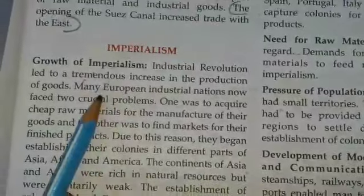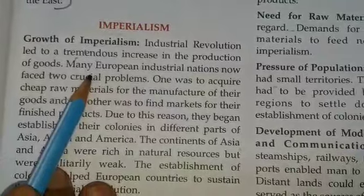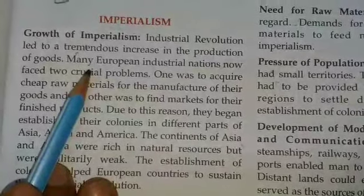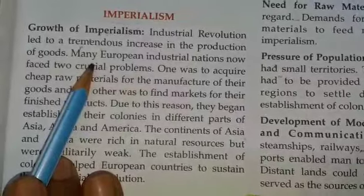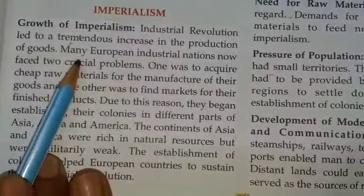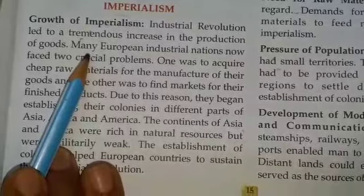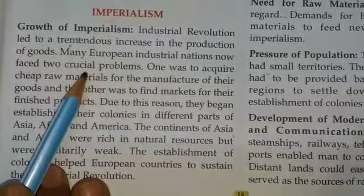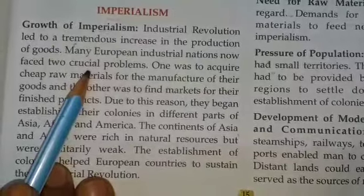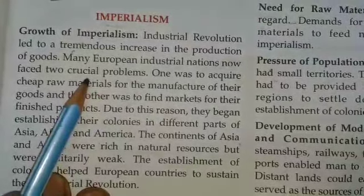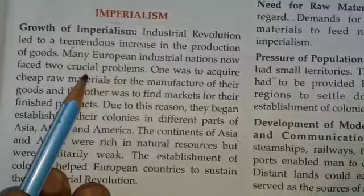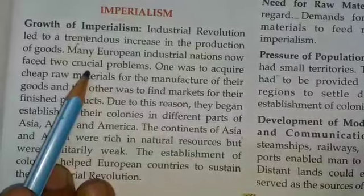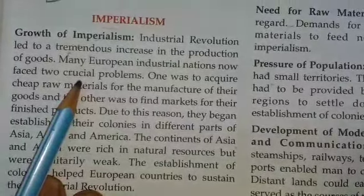Growth of Imperialism: The Industrial Revolution led to a tremendous increase in the production of goods. Many European industrial nations now faced two crucial problems. One was to acquire cheap raw materials for the manufacture of their goods, and the other was to find markets for their finished goods. Due to this reason, they began establishing colonies in different parts of Asia, Africa and America. The continents of Asia and Africa were rich in natural resources but were militarily weak. The establishment of colonies helped European countries to sustain their Industrial Revolution.